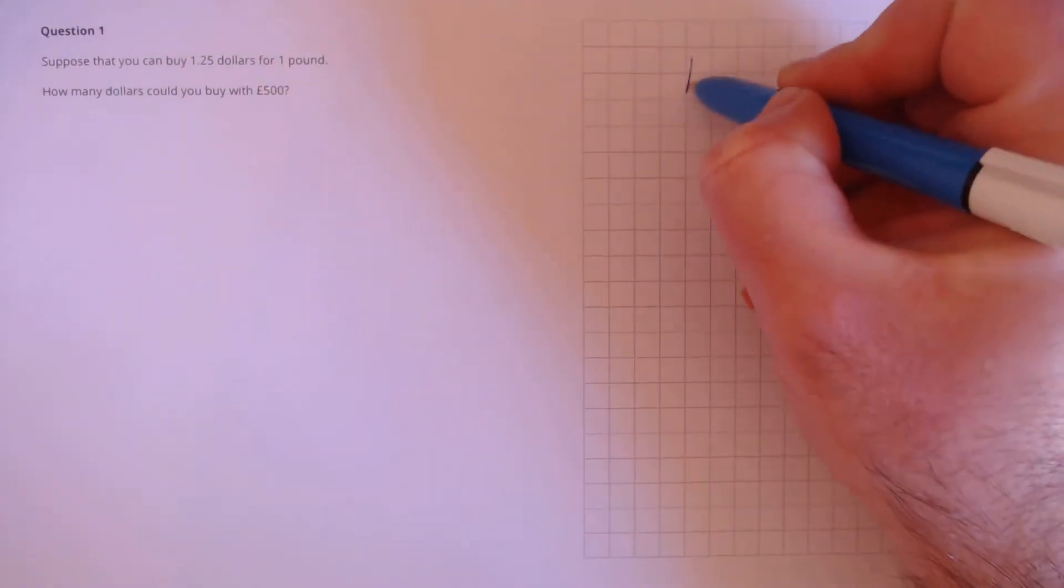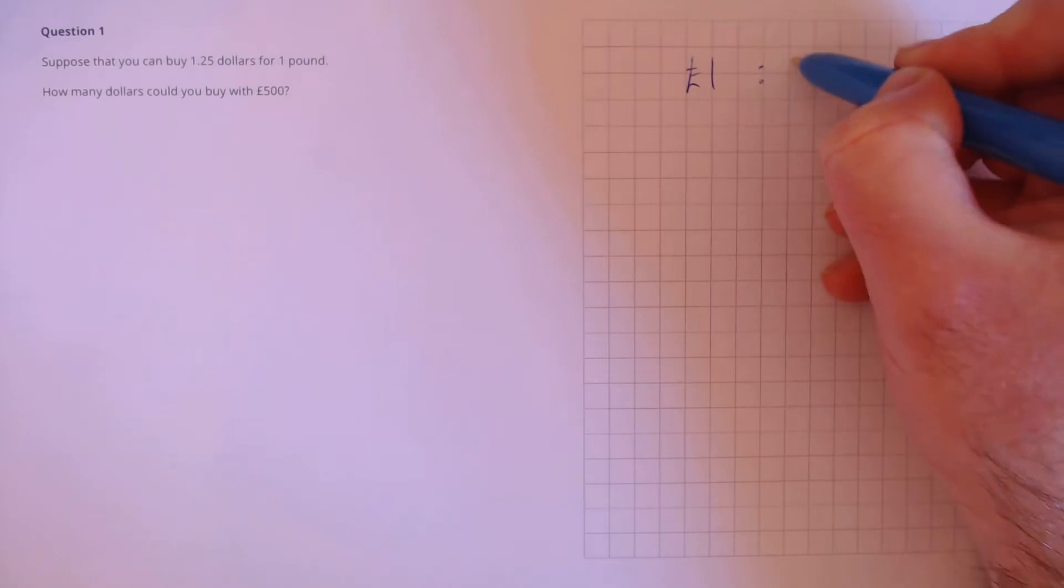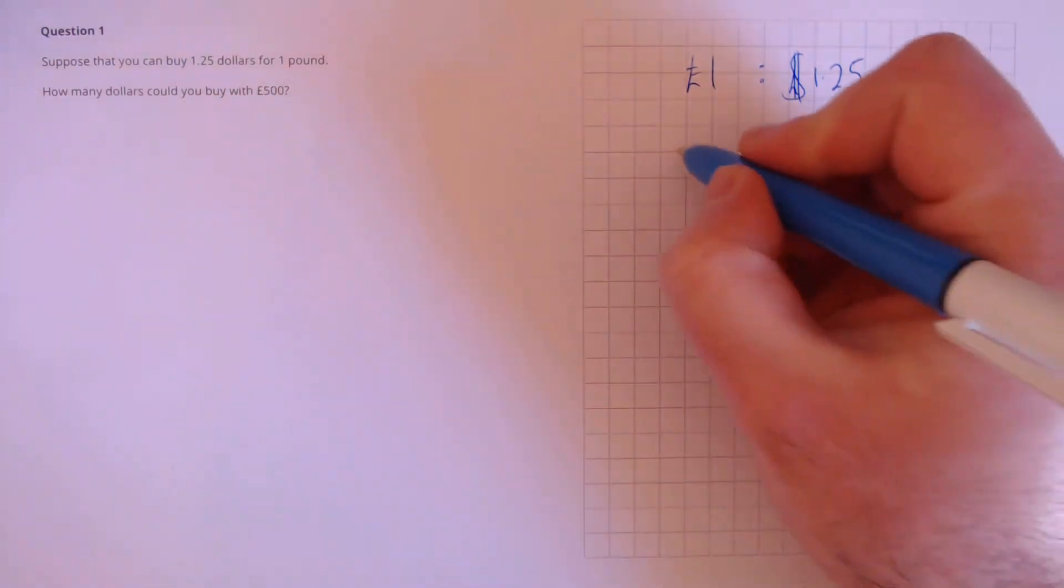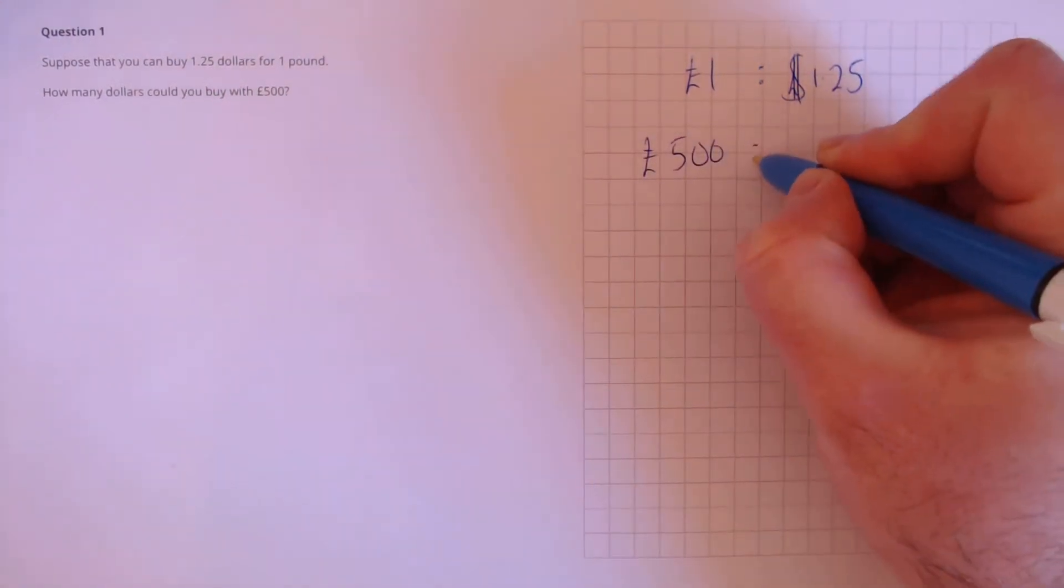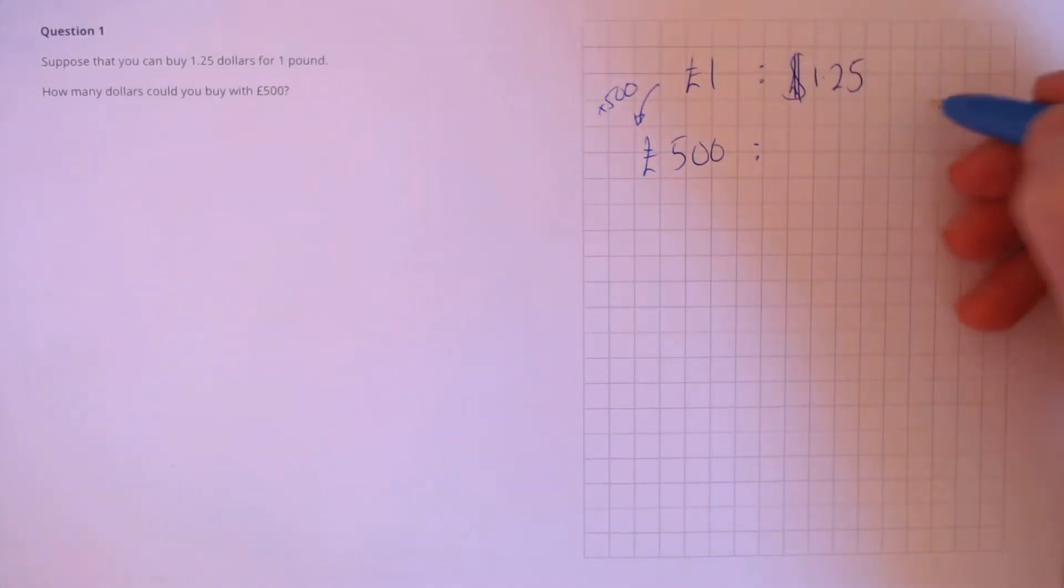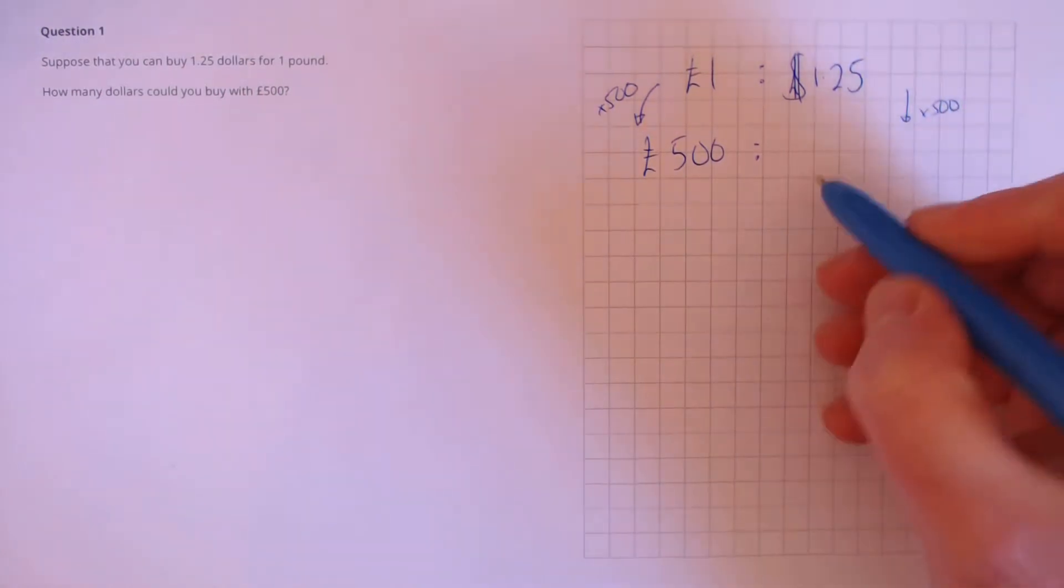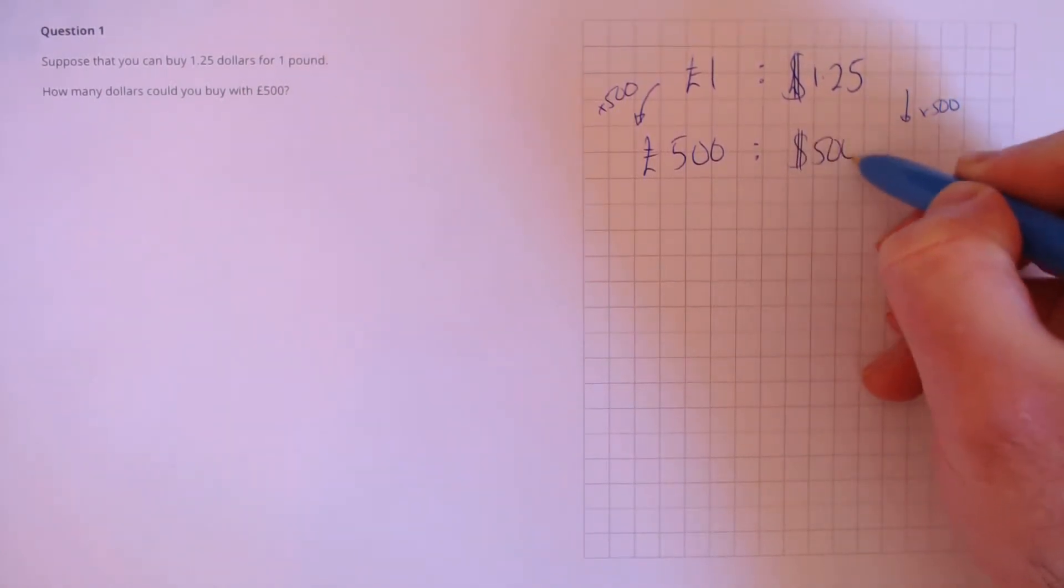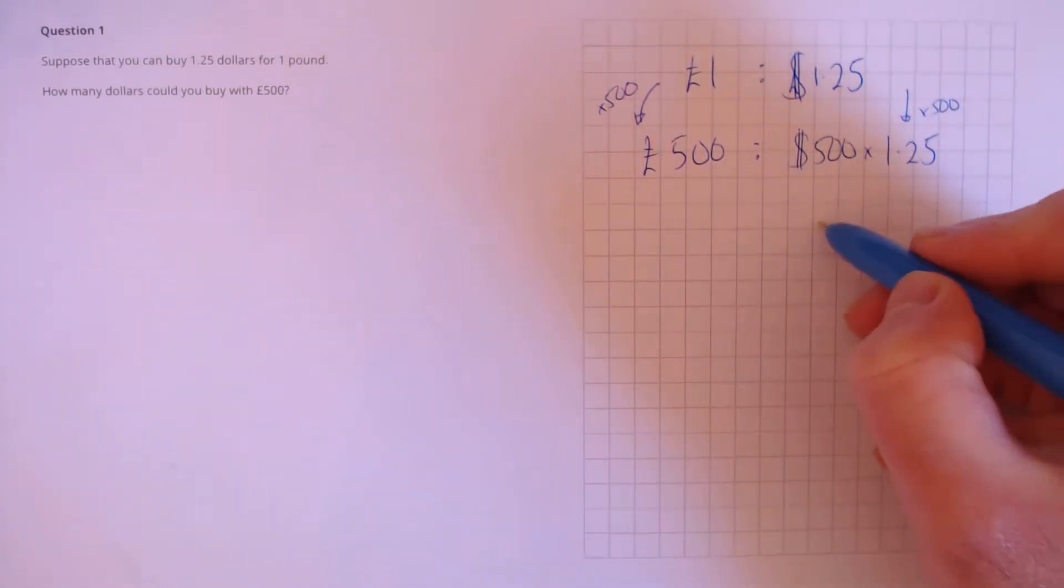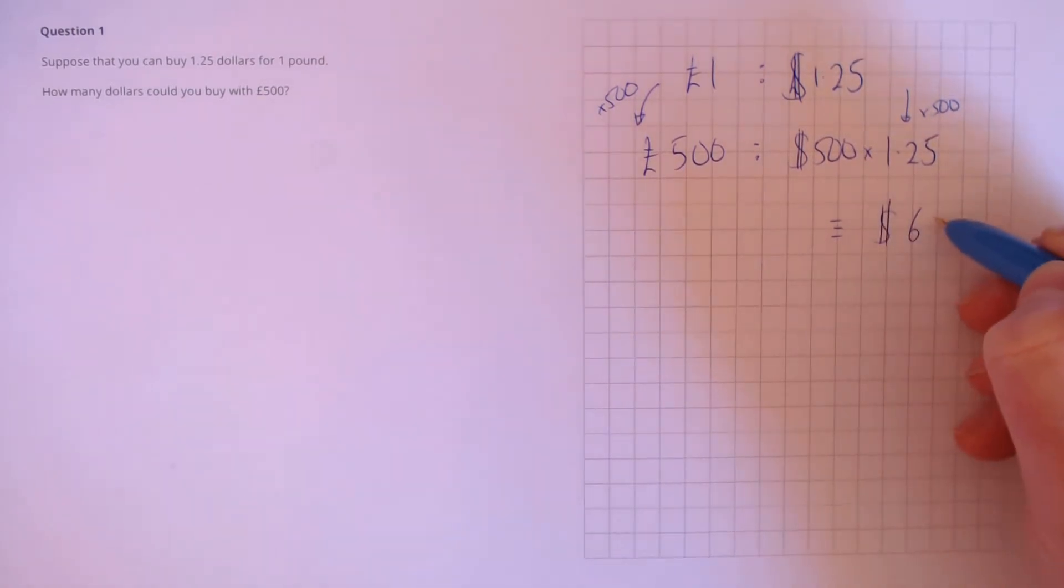Question 1. Suppose that you can buy $1.25 for £1. How many dollars could you buy with £500? We've got the ratio here that £1 is equivalent to $1.25. If we want £500, we've multiplied by 500 times, so we need to do the same to this side. Here we need 500 times 1.25. That's the same as a 25% increase, which is equivalent to $625.